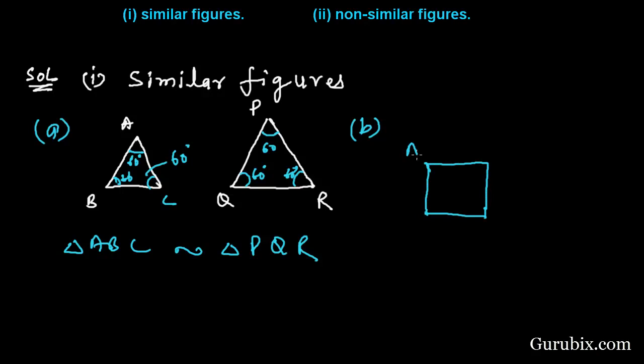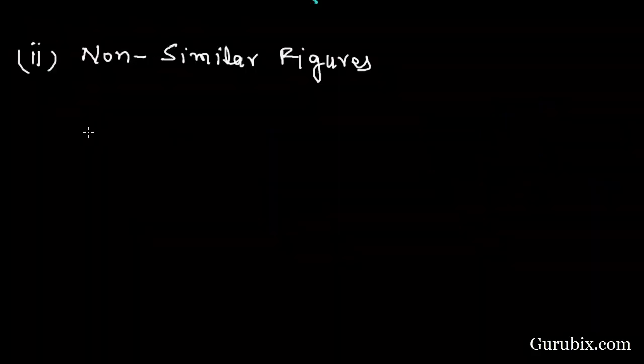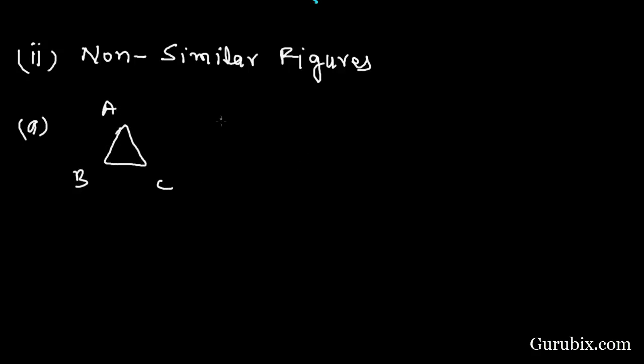Let us give examples of non-similar figures. Suppose here we have a triangle ABC and here we have a square, this is a square PQRS. These are two non-similar figures.